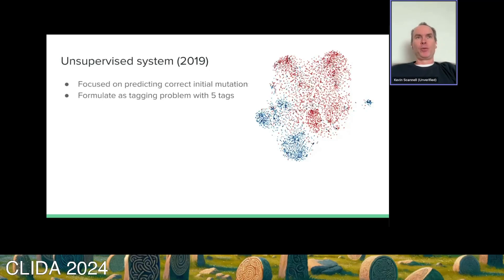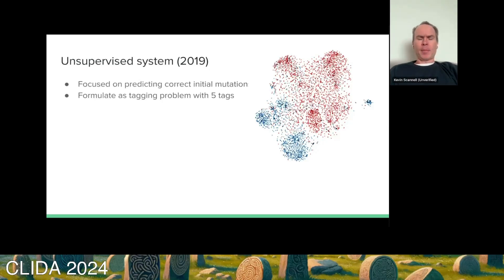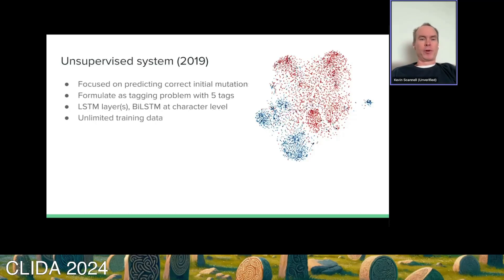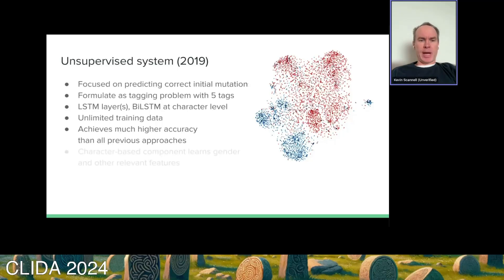This is unlike Welsh, Breton, or Manx. Gaelic is transparent too, which is good news. It means I can get very reliable training data for this unsupervised problem just from raw text. As an older system, I used recurrent layers to train a model. It has character-level information as well, to give information about the spelling of words, which is sometimes informative for this problem. It achieved very high levels of accuracy as just a tagging problem.